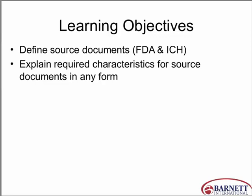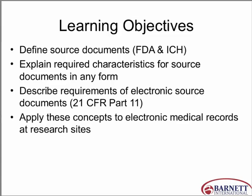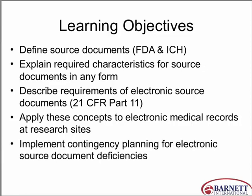We're going to explain the required characteristics for source documents in any form, because let's not forget what source is. Source is the first place information is captured, and that doesn't always mean a written piece of paper — it could be an X-ray or a number of different things. We're also going to describe the requirements of electronic source per Part 11, apply these concepts to the EMR at research sites, and talk about implementing a contingency plan for electronic source document deficiencies and managing site and sponsor activities regarding electronic medical records.